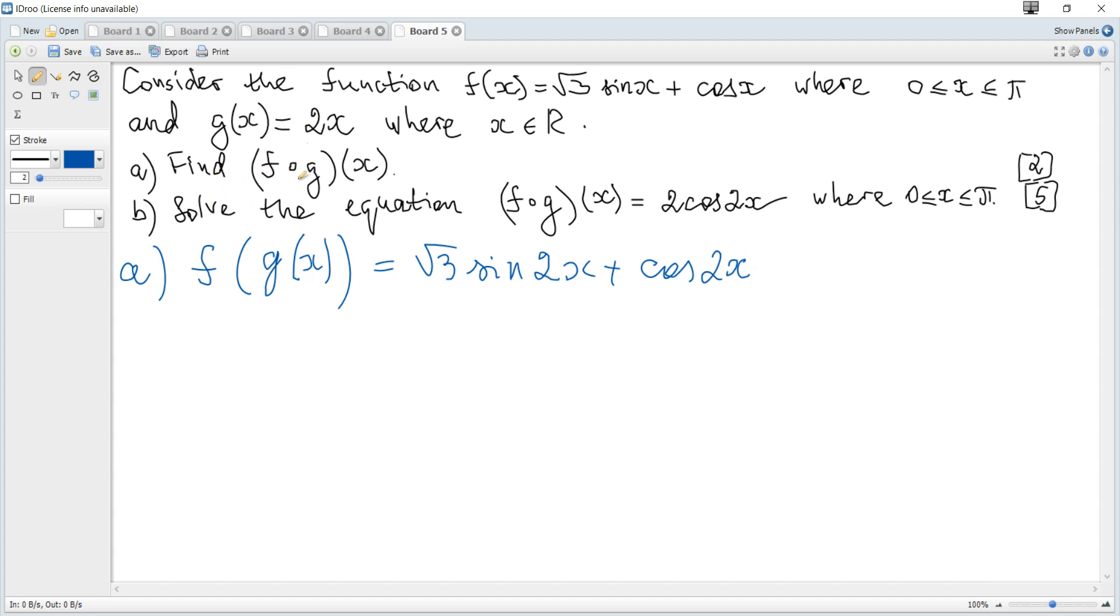Now we solve the equation where this equals 2cos(2x). So √3sin(2x) + cos(2x) = 2cos(2x). We can move the cosine to the right, and it becomes √3sin(2x) = cos(2x).